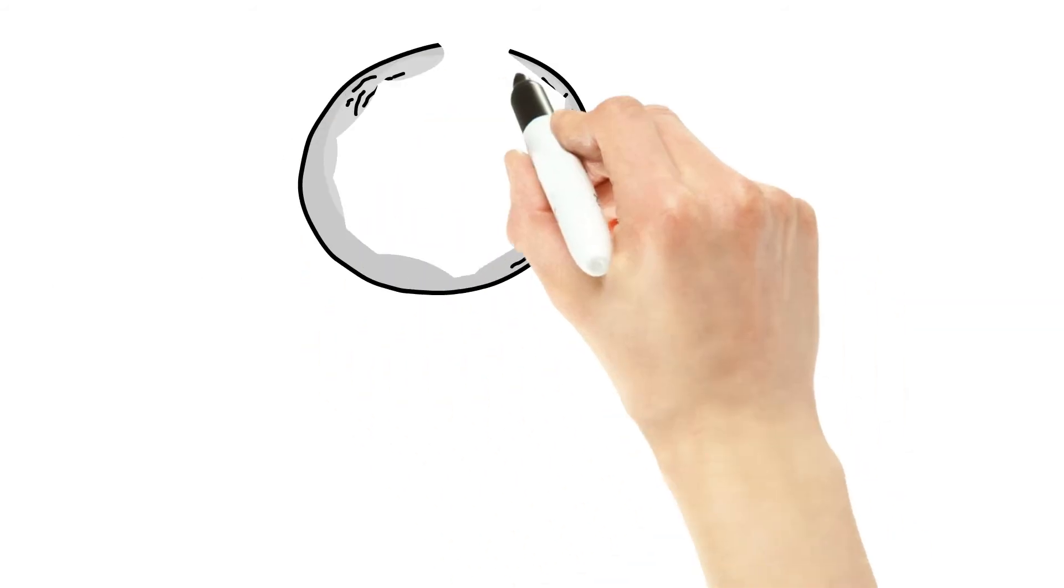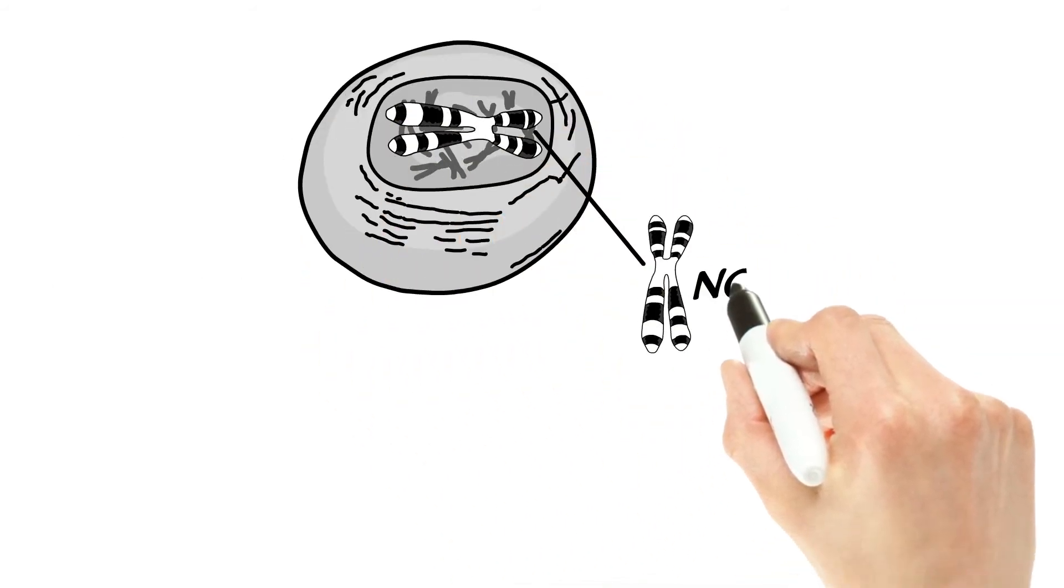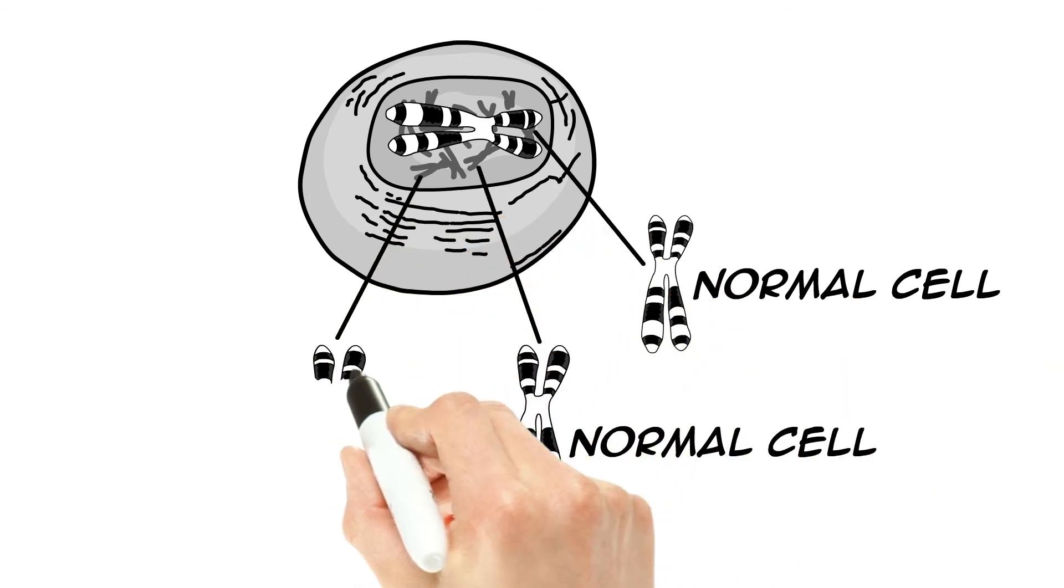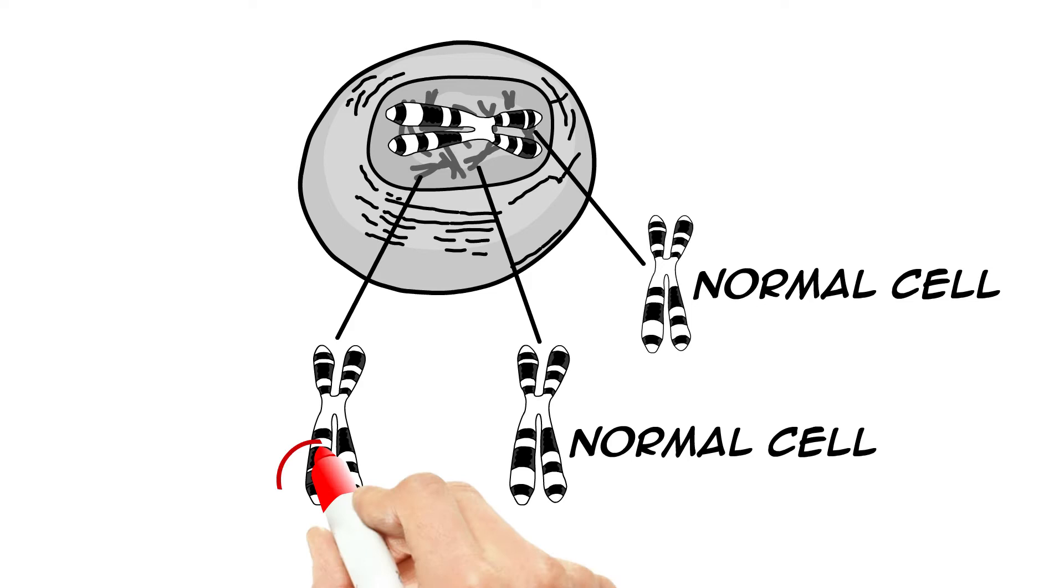Our bodies are constantly making new white blood cells, and very occasionally, a mistake is made when the new cell's chromosomes are copied over from previous cells. Some of these mistakes are harmless, but others can turn a normal white blood cell into a CLL cell.